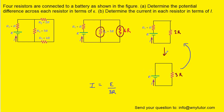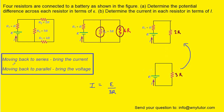When moving backwards through our drawings, we follow two rules: when moving back to series resistors, we bring the current; when moving back to parallel resistors, we bring the voltage. Starting with the 3R simplified resistor and moving backwards, we're moving back to series resistors, so we bring the current. The current in the simplified circuit flows through both of those series resistors.